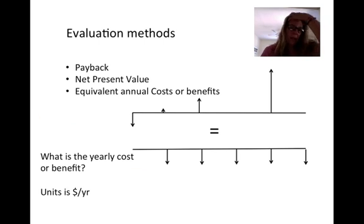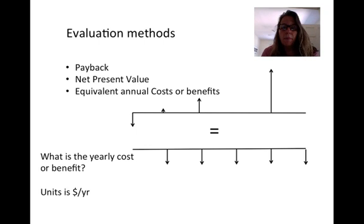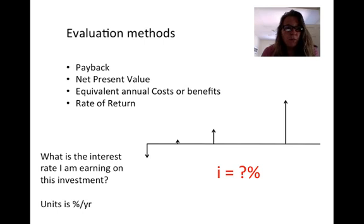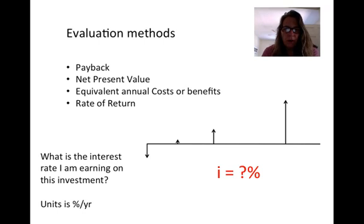Another evaluation method is equivalent annual cost or benefit. We look at the cash flows and ask: what is the equivalent yearly annual cash flow? We convert it not to a present value but to an annual value, so the units are dollars per year. Another method is rate of return — what interest rate am I earning on this investment? What is the percent return per year? That's the rate of return method.